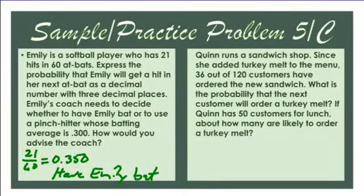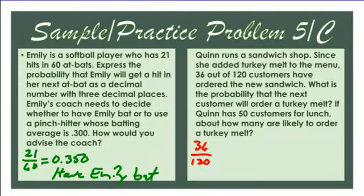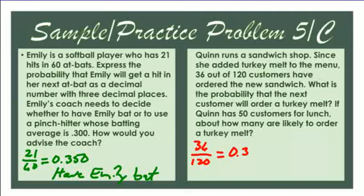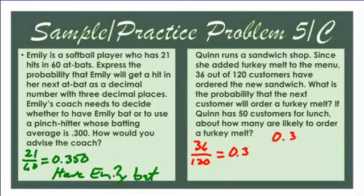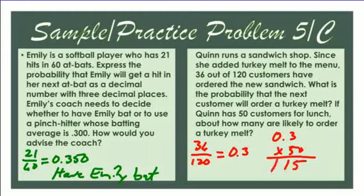Quinn runs a sandwich shop. Since adding turkey melts, 36 out of 120 customers have ordered the new sandwich. What is the probability the next customer orders a turkey melt? 36 divided by 120 equals 0.3, or three tenths. If Quinn has 50 customers for lunch, about how many will order a turkey melt? 50 times 0.3 equals 15 — so about 15 customers will likely order a turkey melt.